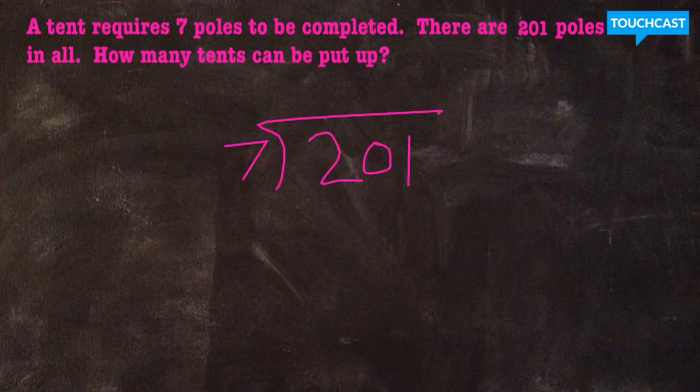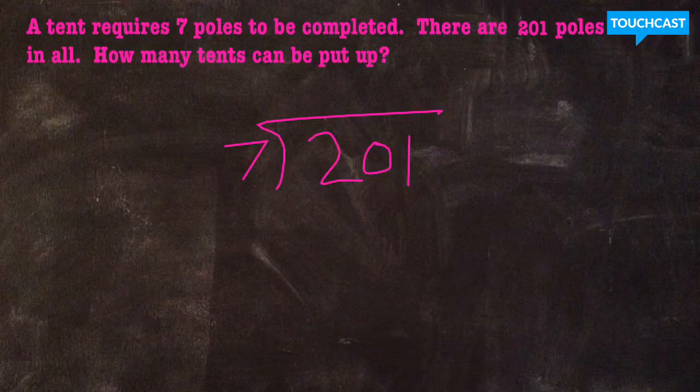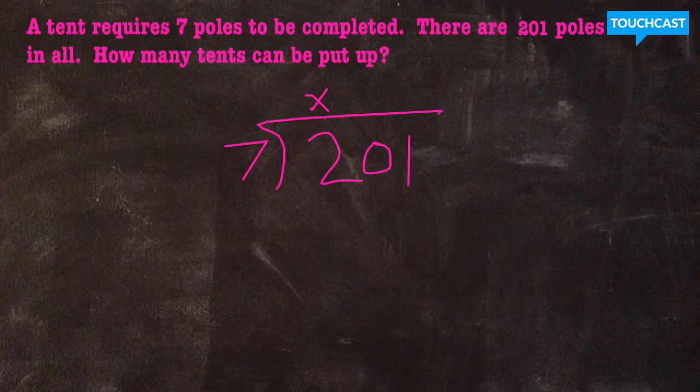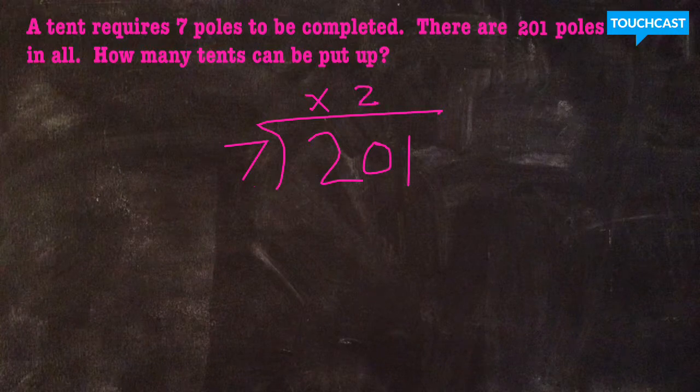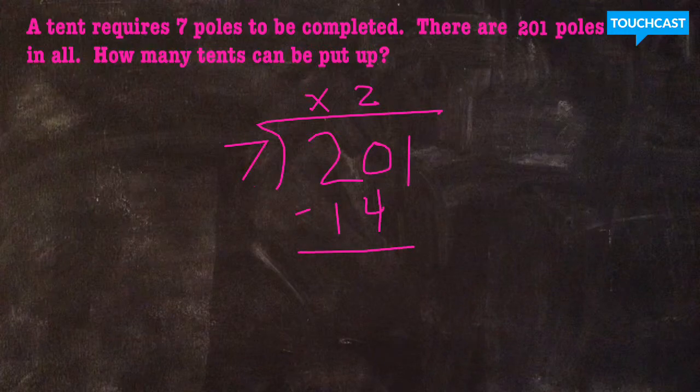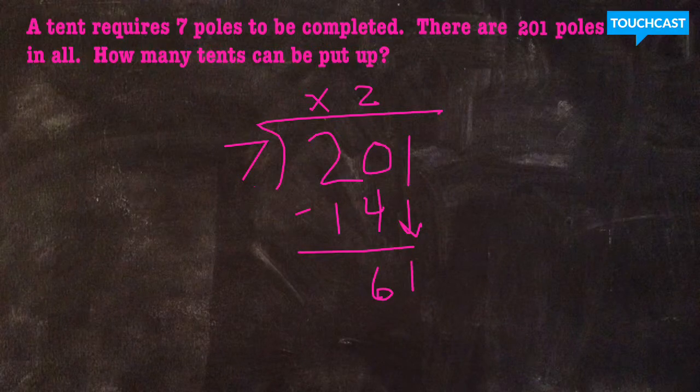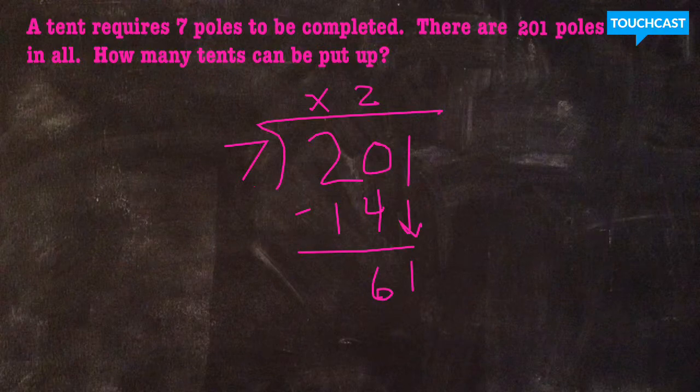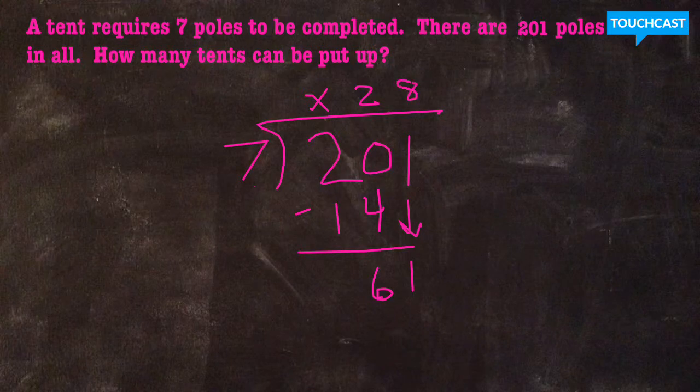So I'm going to look at this and know that I need to divide 201 poles by seven poles per tent. If I divide 201 by 7, I'll know how many tents I can put up complete with seven poles. So seven does not go into two because seven is larger than two, so I'm going to put my little x there. But seven does go into 20 two times without going over. Two times seven is 14. So we're going to complete our regular long division. 20 minus 14 is 6. Bring down my 1.